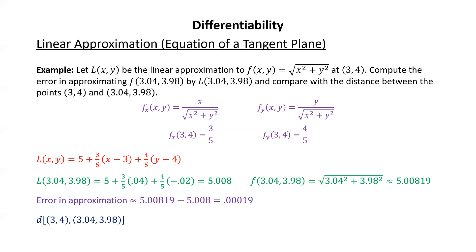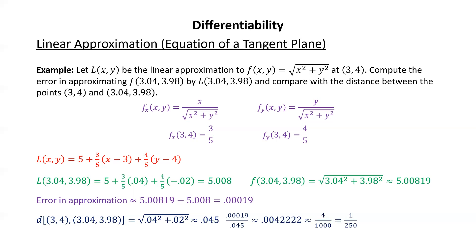The distance between the two points using the distance formula: 3.04 minus 3 is 0.04, and 3.98 minus 4 is negative 0.02. So we compute the square root of 0.04² plus 0.02², which gives about 0.045. Taking the error in approximation and dividing by this distance comes out to about 1 over 250. In other words, the error in the approximation is about 1/250th of the distance.